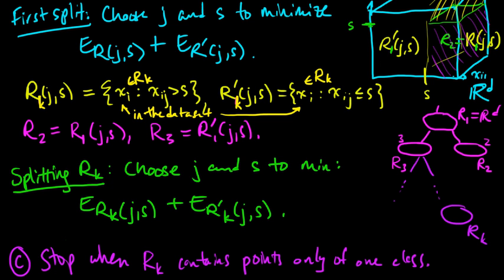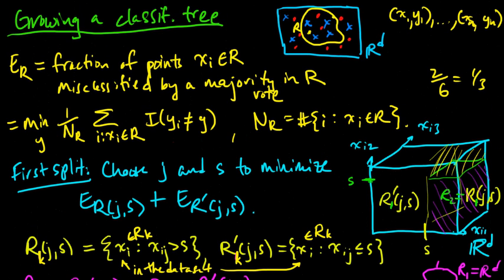So this defines a procedure for building a classification tree. It can be generalized, so we use the misclassification error here, but this can be generalized to use other types of quantities to minimize, such as the entropy or another possibility is to use what's called the Gini index.